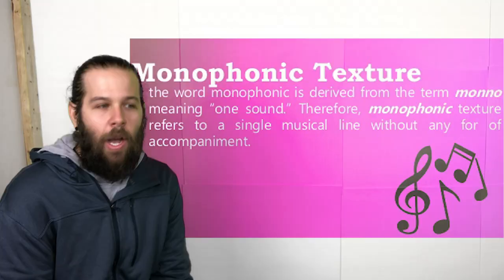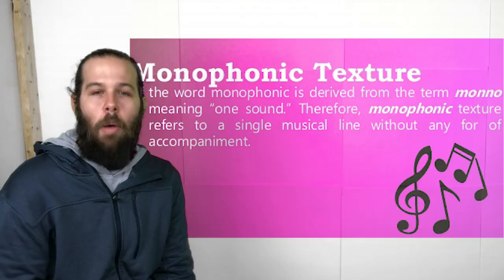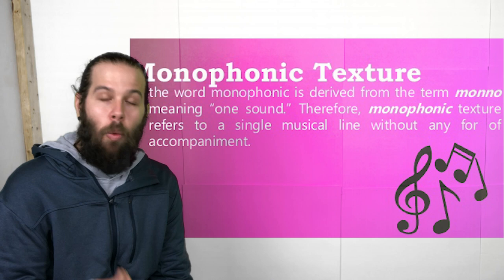Well, a single melody, like the one you just sang for us, is an example of a monophonic texture. Mono means one. So when a melody is being sung by one or more people in unison, it's an example of a monophonic texture.